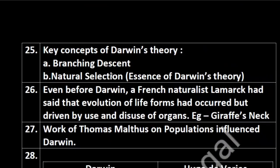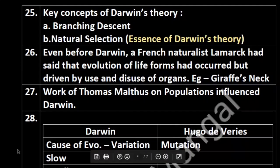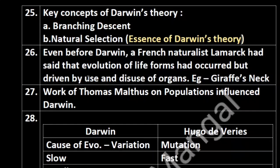The key concepts of Darwin's theory are branching descent and natural selection. Natural selection is the essence of Darwin's theory. Even before Darwin, the French naturalist Lamarck had said that evolution of life forms had occurred, but was driven by use and disuse of organs.